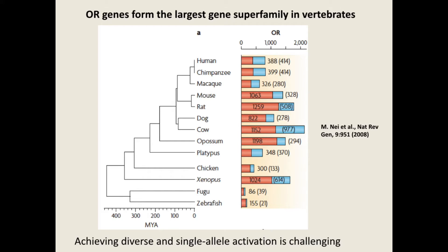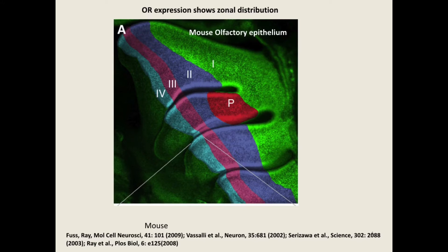This is really mission impossible. Fortunately, the task is slightly easier. Here shows the mouse olfactory epithelium — olfactory sensory neurons segregate into different regions. In each region, only a subset of OR genes are expressed. That is, the task changes from one-and-only-one from a few thousands to one-and-only-one from a few hundreds, which is still very challenging.